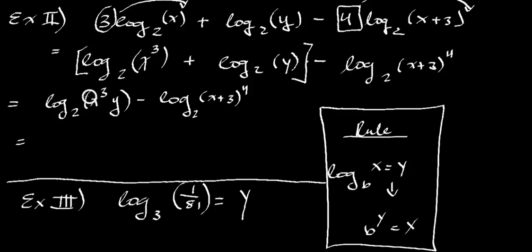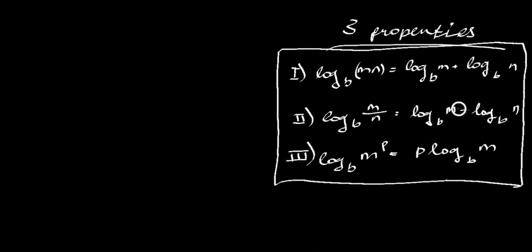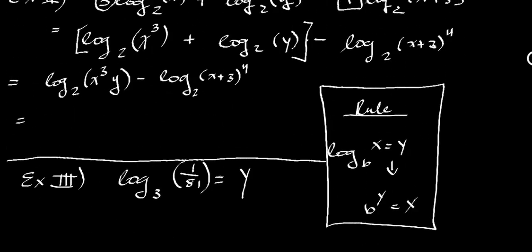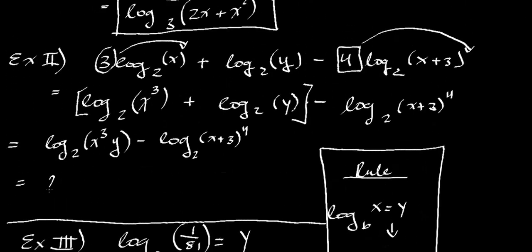Our last step is, well, hold on. We are subtracting. What does it mean to subtract? When we are subtracting two logs with the same bases, it's the same thing, it's putting it under a fraction, a ratio. So we still have our log base 2, this over this. So we have x to the 3rd y over x plus 3 to the 4th. And there is our final answer. We don't want to do anything. It's not necessary and not needed. And you really can't do anything. So this is our final answer.